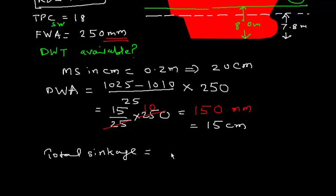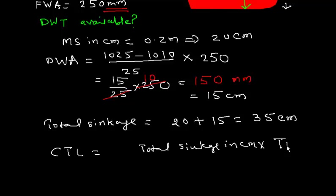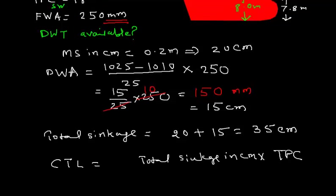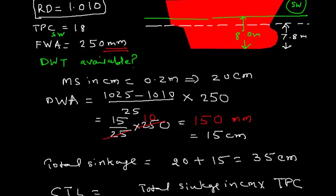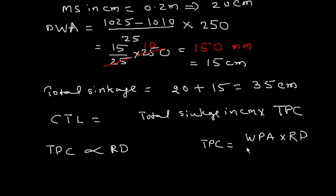Total sinkage is 20 centimeters plus dock water allowance of 15 centimeters, giving 35 centimeters. The cargo to load equals total sinkage in centimeters multiplied by TPC. The TPC given is 18 for salt water, but since we are in dock water, we need to convert the TPC. TPC is directly proportional to relative density because TPC equals waterplane area times relative density divided by 100.